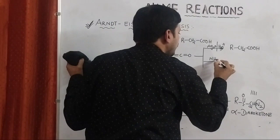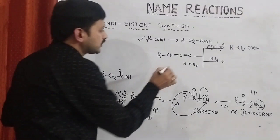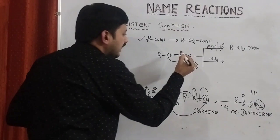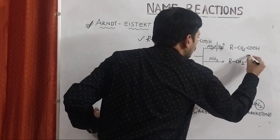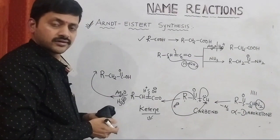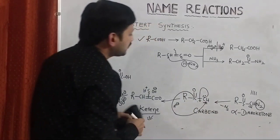Suppose this ketene intermediate is treated with ammonia. H-NH2 is written for convenience — H will attack one carbon and NH2 will attack the other carbon. The pi bond is subjected to cleavage, giving RCH2-C(=O)-NH2. These are amides. It means that by using this synthesis, along with carboxylic acids, we can also synthesize amides.